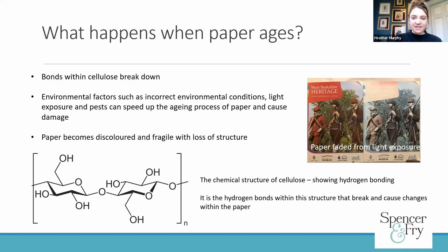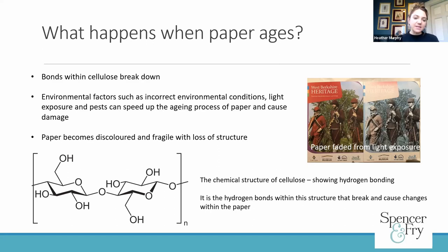When paper ages, without going too far into the science, what essentially happens over time is that the chemical bonds within the paper structure itself — called hydrogen bonds — hold the paper together and break down over time, causing it to degrade. The breaking down of the hydrogen bonds can be catalyzed and sped up by things like poor quality components or additives in the paper itself, or environmental factors like light, temperature, and humidity. So it's important to note there are two things: the materials the paper is made up of, and the environment or life the paper has had, both of which contribute to the kind of degradation you see.